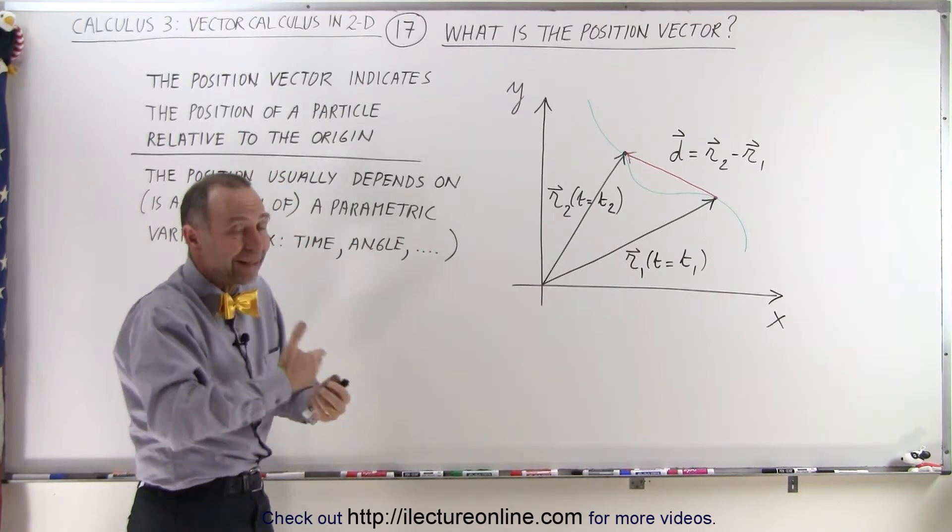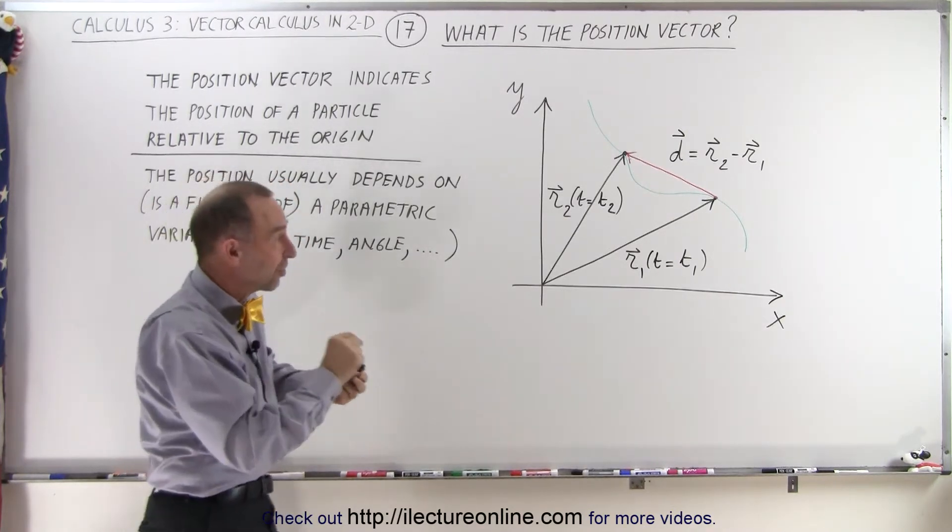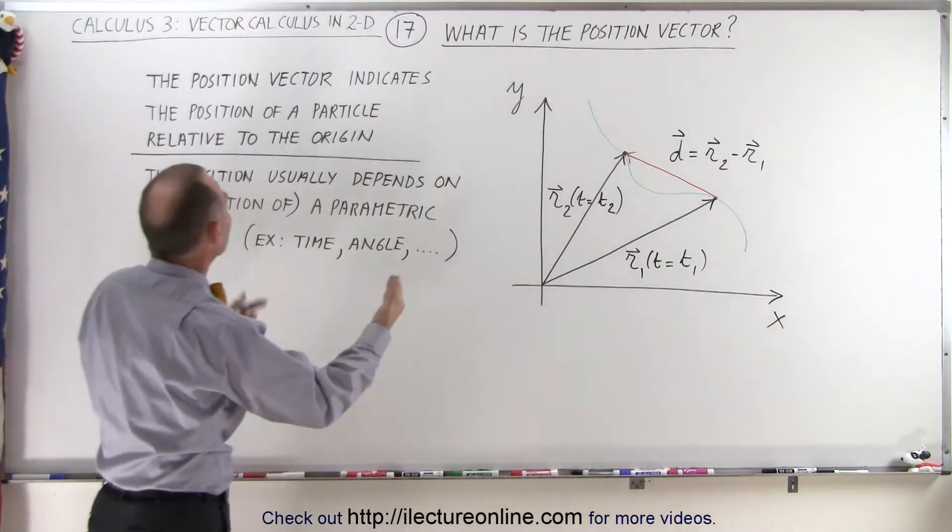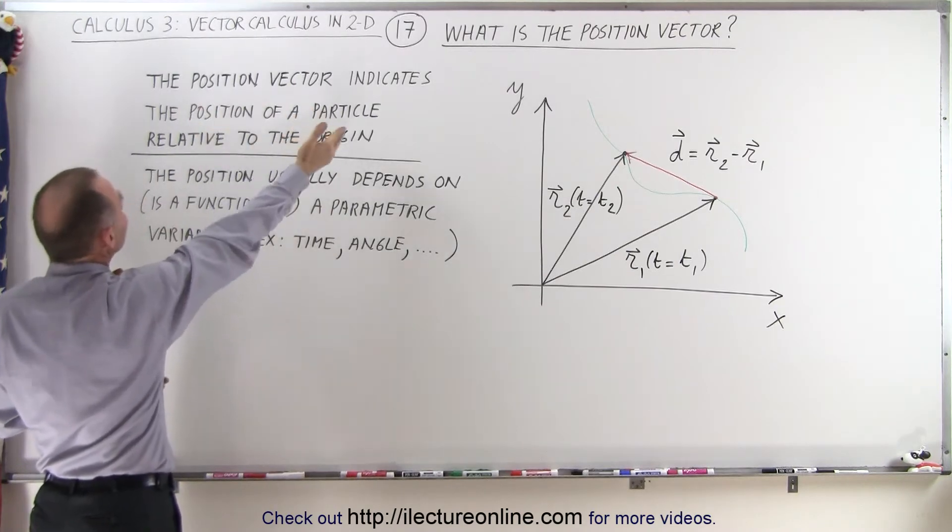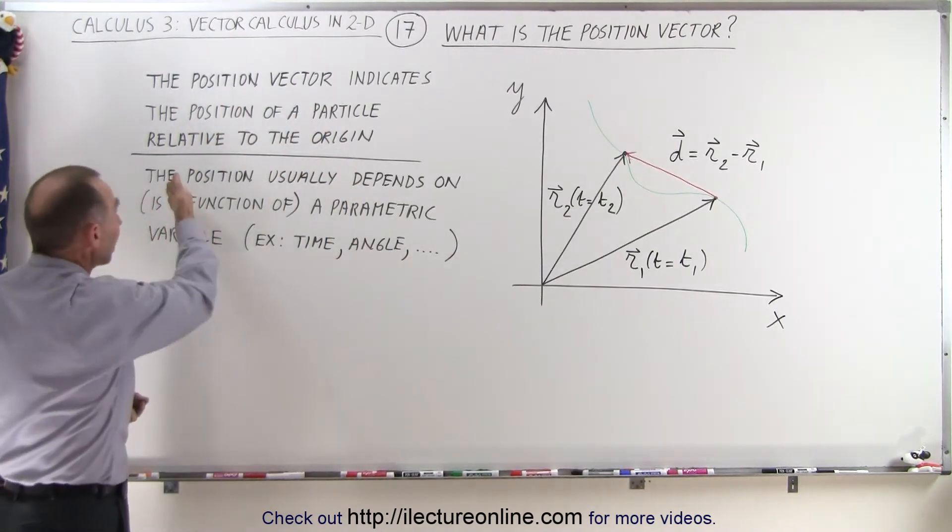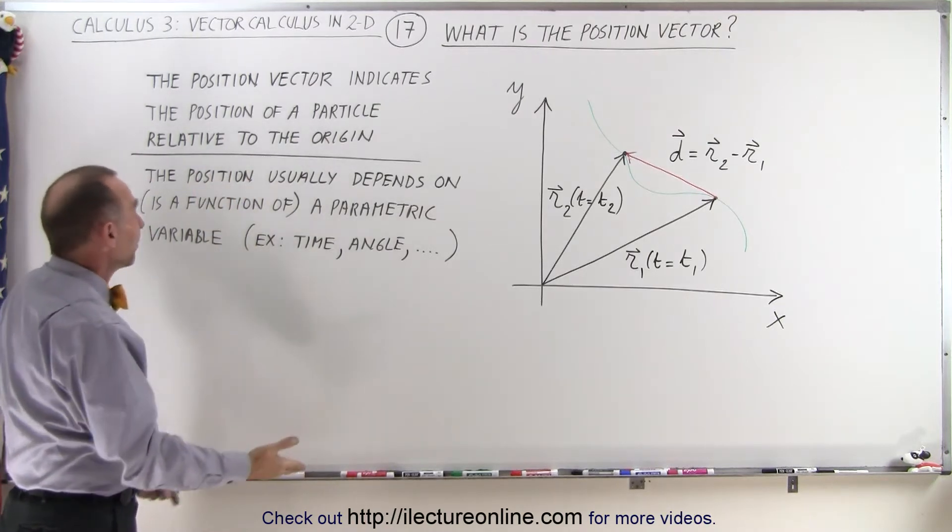So that vector will have an x and a y component that tells you exactly where that particle is at or where that point is at. So let's read the definition. The position vector indicates the position of a particle or a point relative to the origin. It's as simple as that.